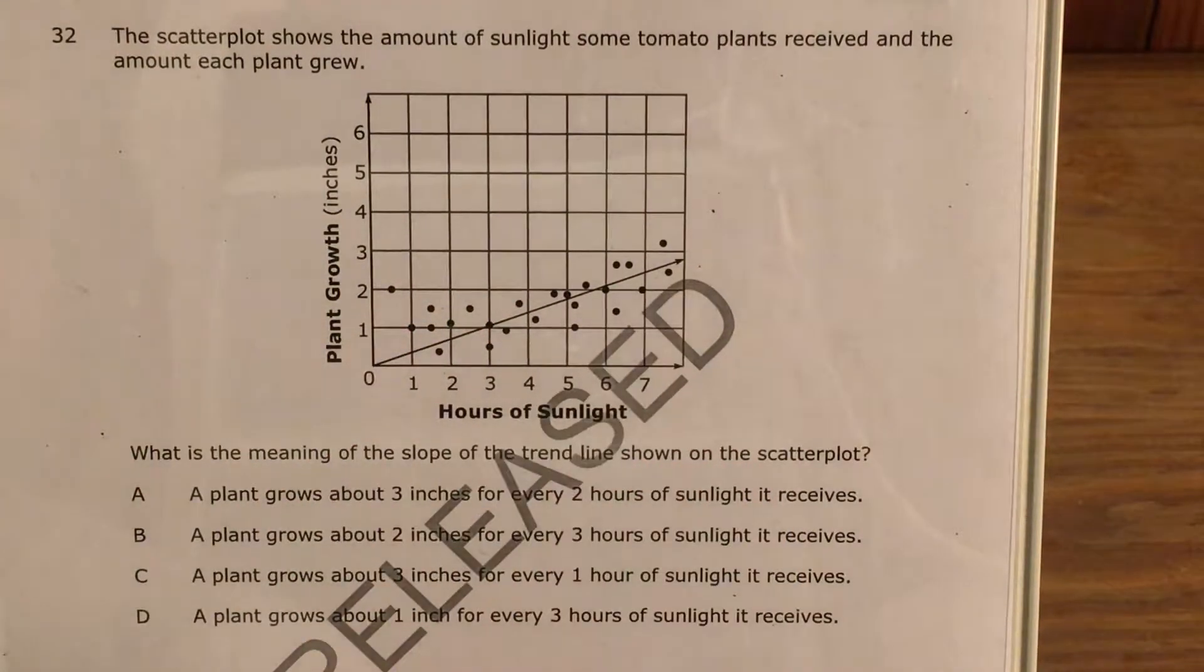We see the points, we see the line of best fit, and we're supposed to see which of these choices best describes where the line is going.